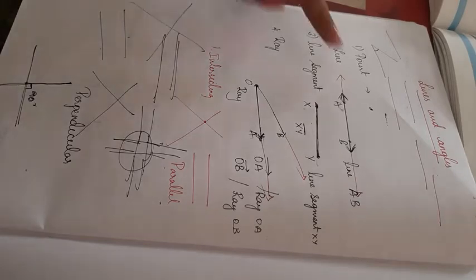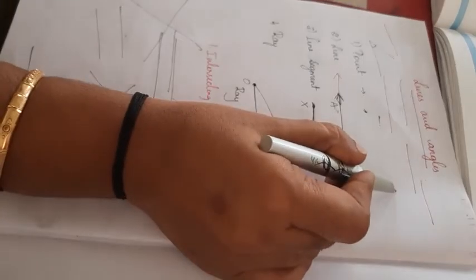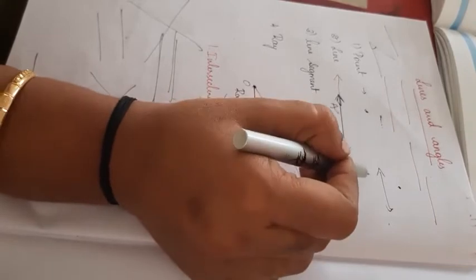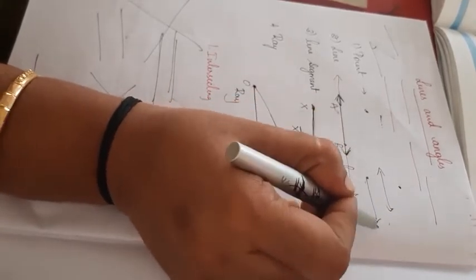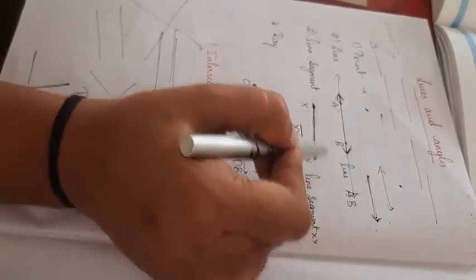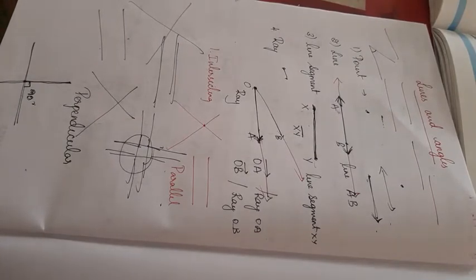So, what did you understand? Point means one small point. Line means it can extend in both directions. Line segment means it has fixed length and cannot be extended. A ray is in one direction where the line segment is fixed — if it is 5 centimeters, it is 5 centimeters.